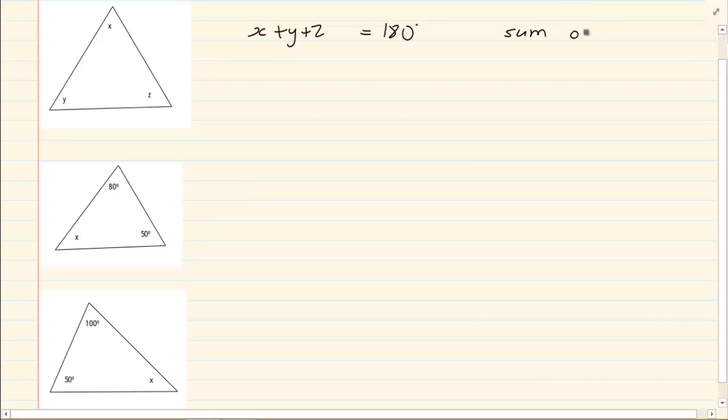Remember with geometry you have to give a reason. So if I write x plus y plus z is equal to 180 degrees, I must say why am I saying that? Why am I making this statement? Why am I saying it's equal to 180 degrees?